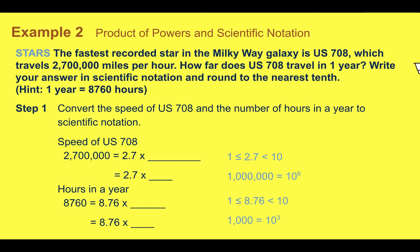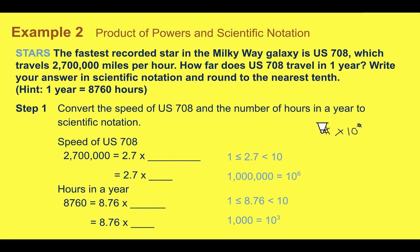Example two: product of powers and scientific notation. Our real-world context here is stars. The fastest recorded star in the Milky Way galaxy is US 708, which travels 2,700,000 miles per hour. How far does US 708 travel in one year? Write your answer in scientific notation and round to the nearest tenth. Hint: one year equals 8,760 hours. As a quick review, scientific notation is a number less than 10 multiplied by 10 to a specific power. So first, let's convert the speed of US 708 and the number of hours in a year to scientific notation. We have 2,700,000.